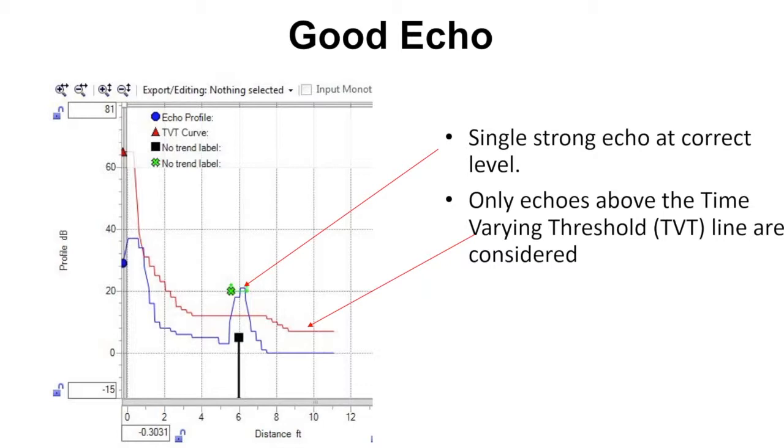The red line is what Siemens defines as their TVT or time-varying threshold line. Some people call it a mapping line. What that line tells us is that no echo is going to be considered as a valid echo unless it exceeds the red line. In this case the only echo that we have exceeding the red line is at the six foot level and that's a good echo for us.